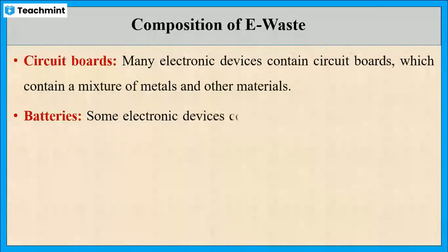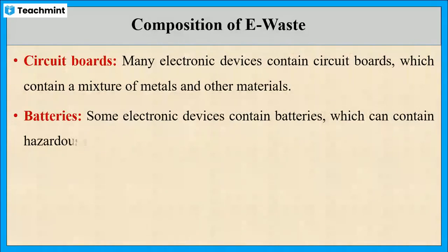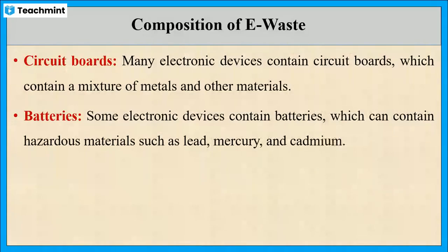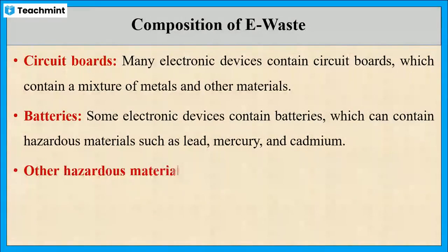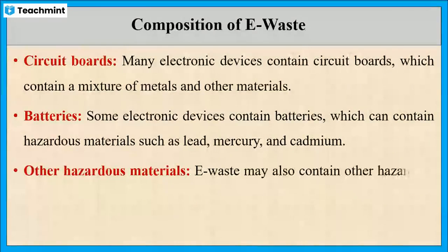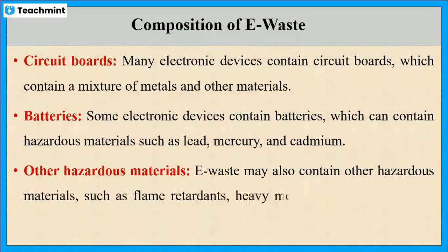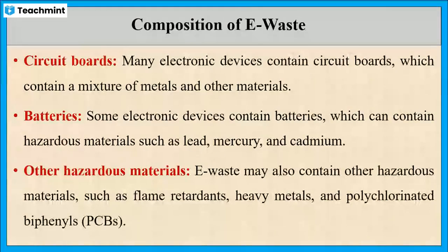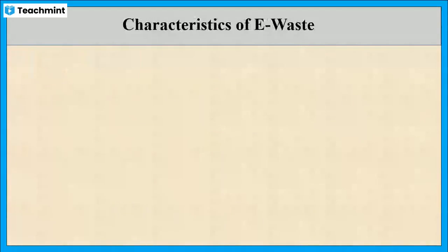Batteries in e-waste contain hazardous materials such as lead, mercury, and cadmium. E-waste also contains other hazardous materials such as flame retardants, heavy metals, and polychlorinated biphenyls. These are some of the compositions of e-waste. Next is the characteristics of e-waste.